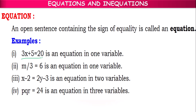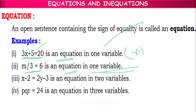So 3x plus 5 equal to 10 is an equation in one variable, because we have only one variable which is x. m by 3 equal to 6 is also an equation in one variable, because it is having variable m.